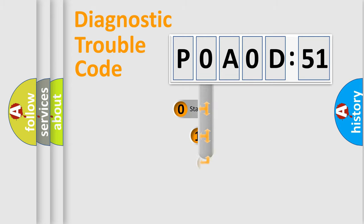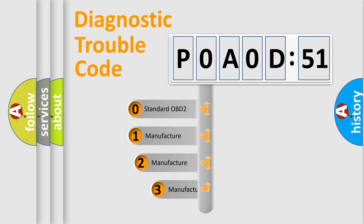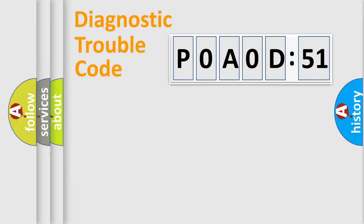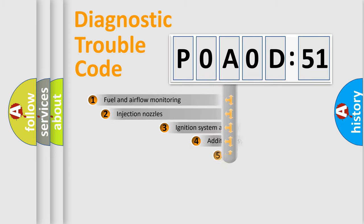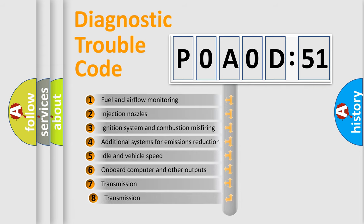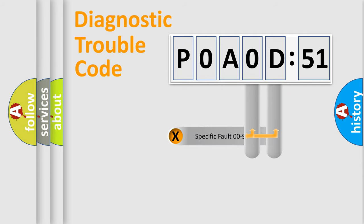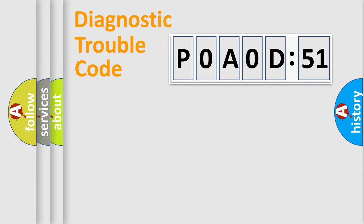This distribution is defined in the first character of the code. If the second character is expressed as zero, it is a standardized error. In the case of numbers 1, 2, or 3, it is a more specific expression of a car-specific error. The third character specifies a subset of errors. This distribution is valid only for the standardized DTC code, and only the last two characters define the specific fault of the group.